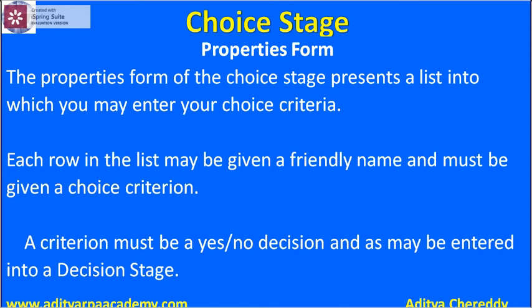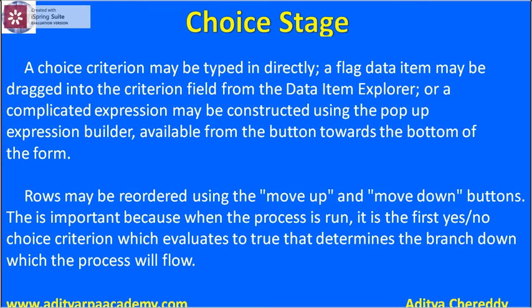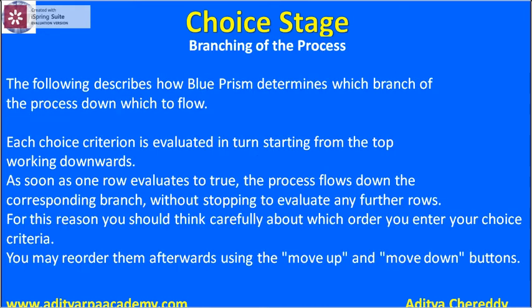The properties form of the choice stage presents a list into which you may enter your choice criteria. Each row in the list may be given a friendly name and must be given a choice criterion. The criterion must be a yes or no decision. The choice criterion may be typed in directly or a data item may be dragged into the criterion field from the data item explorer. A complicated expression may be constructed using a pop-up expression builder available from the button towards the bottom of the form. Rows may be reordered using the move up and move down buttons. This is important because when the process is run, it is the first yes or no choice criterion which evaluates to true that determines the branch the process will flow down.